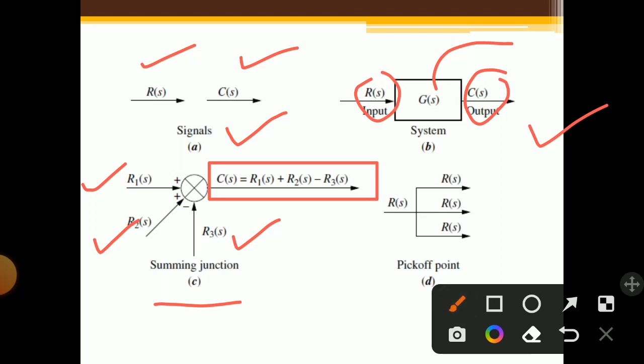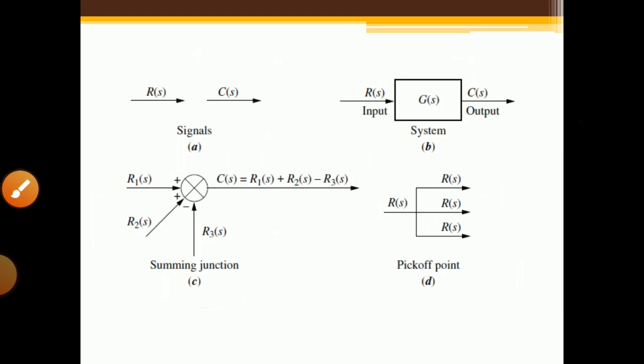The last component is the pick-up point. Suppose one input is on a horizontal line, and from that line inputs are taken above and below. That point is called a pick-up point — from that single point we pick different inputs from the same input line. All three lines have the same input R(S); we have just taken it on different lines, which is why it is called a pick-up point.